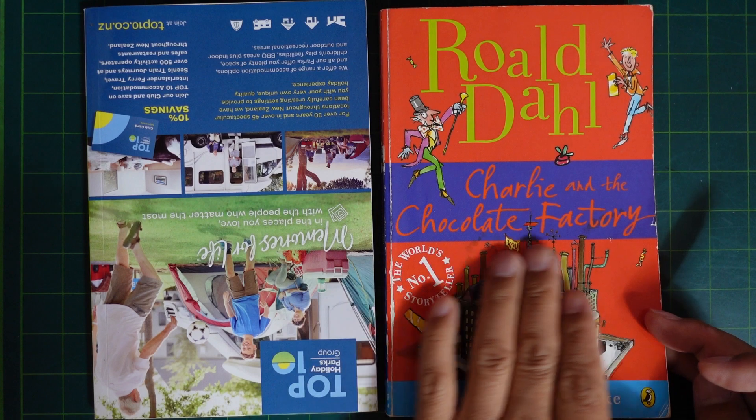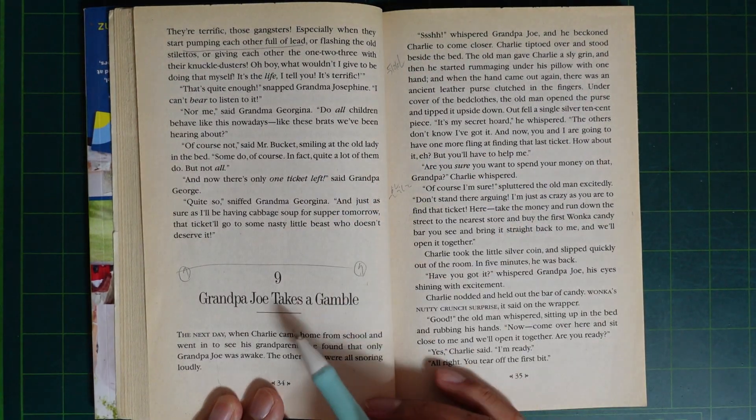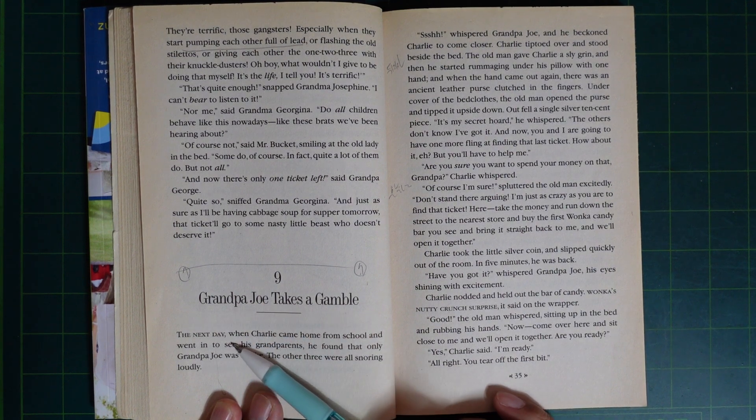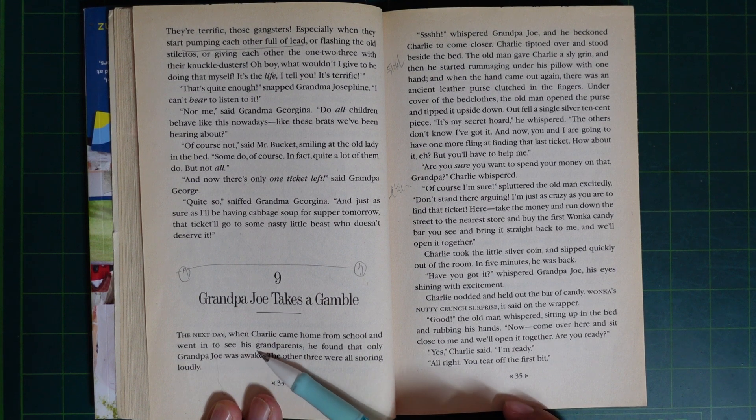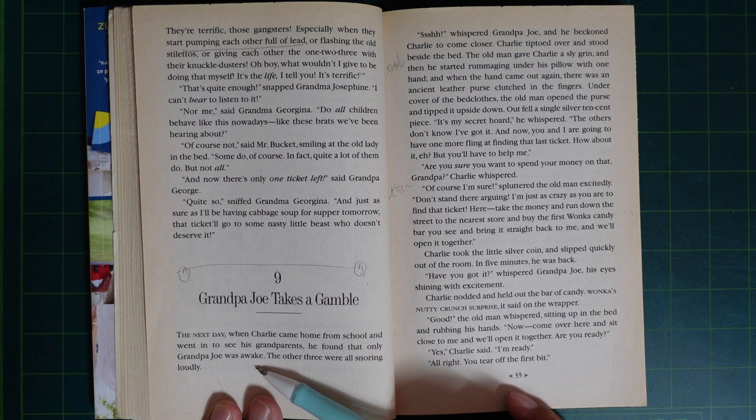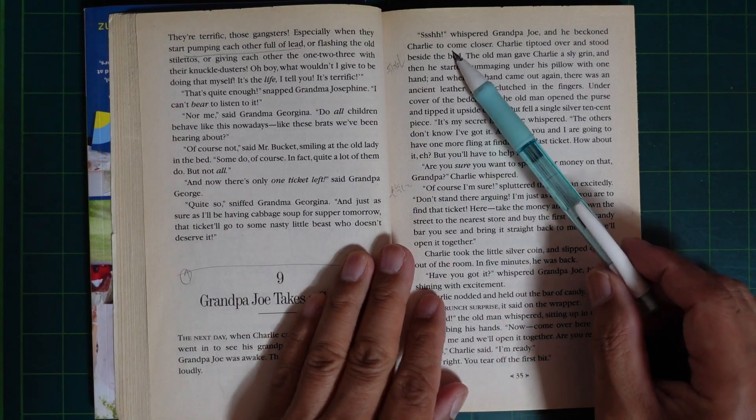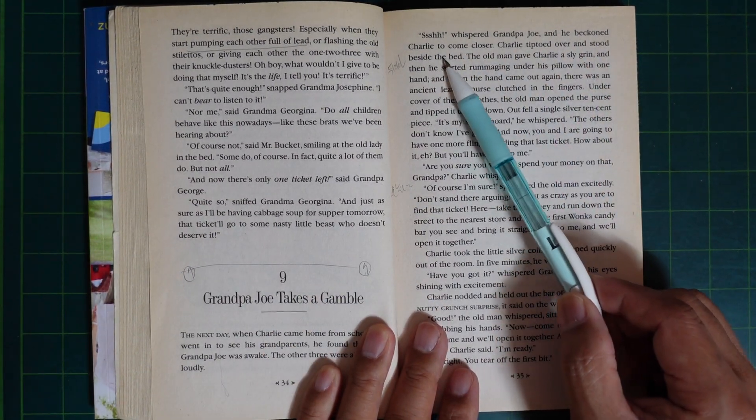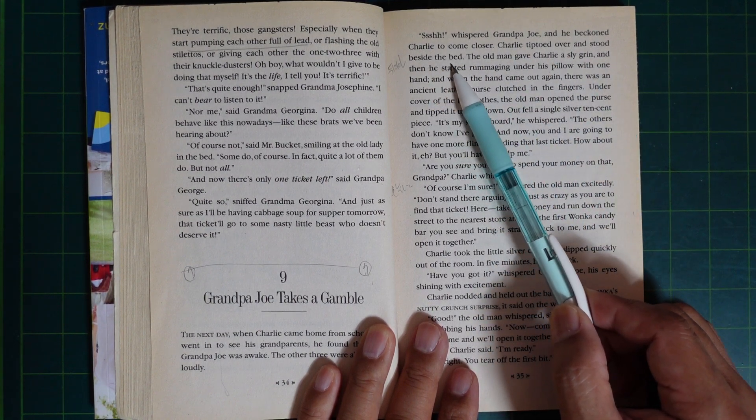Charlie and the Chocolate Factory, Chapter 9: Grandpa Joe Takes a Gamble. The next day when Charlie came home from school and went in to see his grandparents, he found that only Grandpa Joe was awake. The other three were all snoring loudly. Grandpa Joe whispered and beckoned Charlie to come closer. Charlie tiptoed over and stood beside the bed.